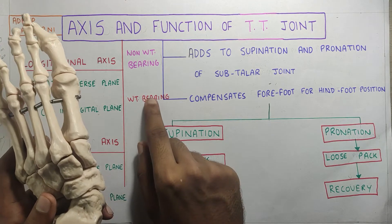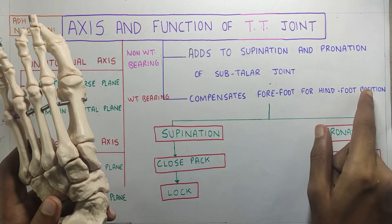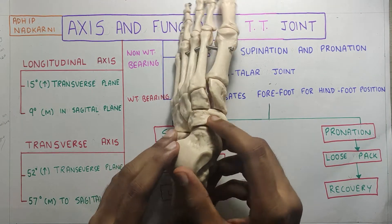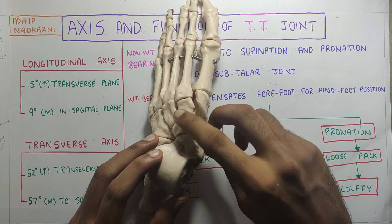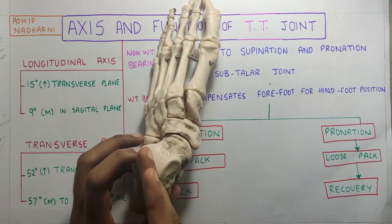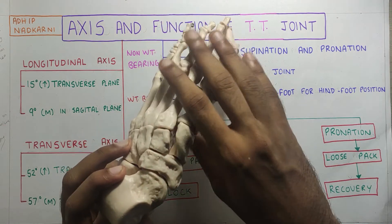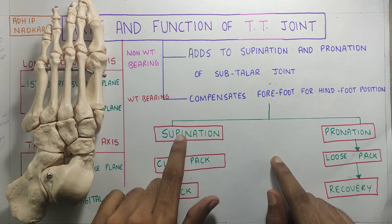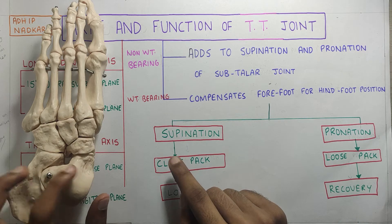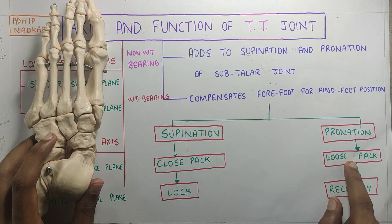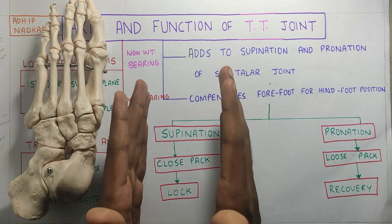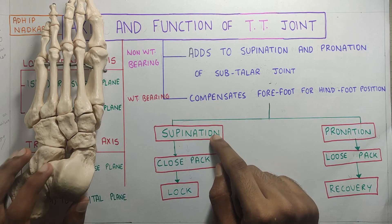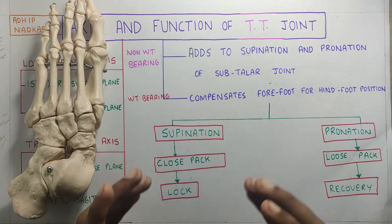In weight bearing, the transverse tarsal joint compensates the forefoot for the hind foot position. When your hind foot goes for supination or pronation, the transverse tarsal joint will act differently — it will go into a closed pack or a loose pack position. In supination, when the hind foot goes for supination, the transverse tarsal joint is in a closed pack position, which locks it.